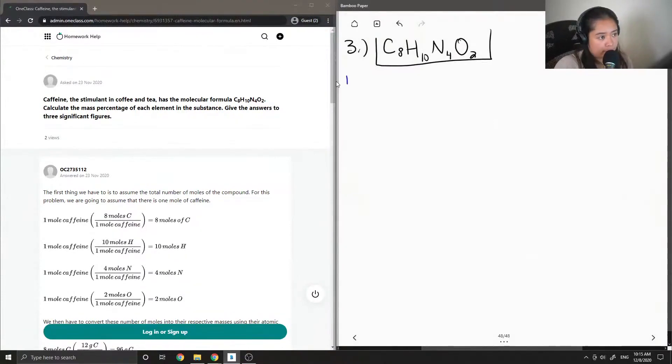So the first step is to find all of the grams for carbon, hydrogen, nitrogen, and oxygen that are contained in one mole of caffeine. I'm going to do an example calculation for the carbon. If we had one mole of caffeine...